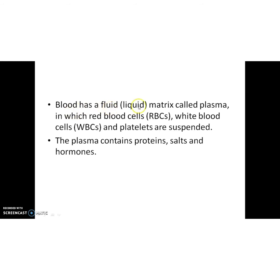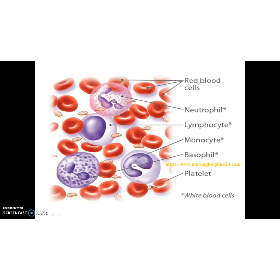Blood has a fluid — a liquid matrix called plasma — in which red blood cells, white blood cells and platelets are suspended. The plasma contains proteins, salts and hormones. Here you can see concave shaped circular red blood cells and different shaped white blood cells. They include neutrophil, lymphocyte, monocyte, basophil, etc. These are all different types of white blood cells. Platelets help for blood clotting.